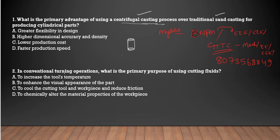What is the primary advantage of using the centrifugal casting process? Lower production cost and faster production speed are options, but the right answer in this particular option is: higher dimensional accuracy and density. You have to use the centrifugal casting process for accuracy and density. The strength of a material is more accurate, as well as the dimensions.